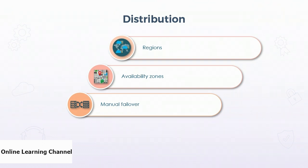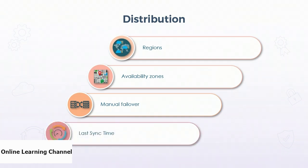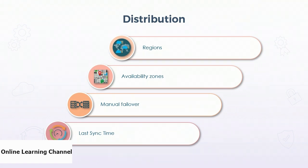Replications between regions happen asynchronously, so there is a possibility that data in the secondary region is not up to date with the primary region at the time of an outage. The last sync time is a property attached to blobs within a storage account that has replication enabled, containing a date stamp with the last successful replication to the secondary region. This can be referenced to determine which is the most up-to-date information when services are restored and a failback is being considered.